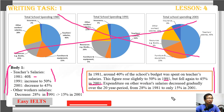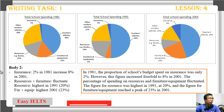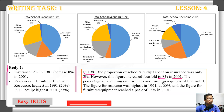Now we look at body two. 'In 1981, the proportion of school expenditure spent on insurance was only two percent. However, this figure increased four-fold — forming four times — to eight percent in 2001.' And the percentage of spending on resources and furniture and equipment fluctuated. The figure for resources was highest in 1991 at 20 percent.